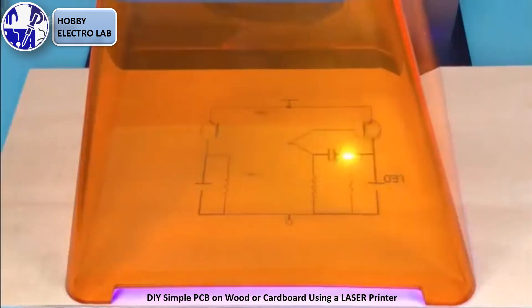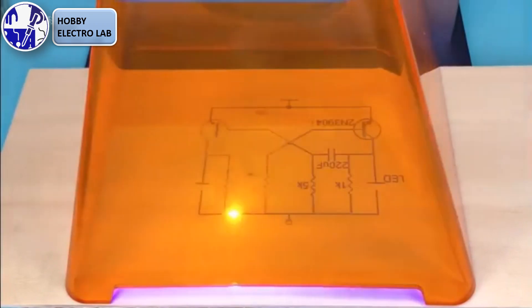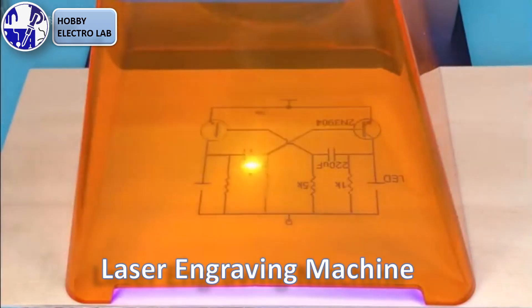In this video, I will show you how to quickly build a simple PCB at home using a mini laser engraving machine. We will be creating a flip-flop circuit project using readily available materials like wooden boards or cardboard.